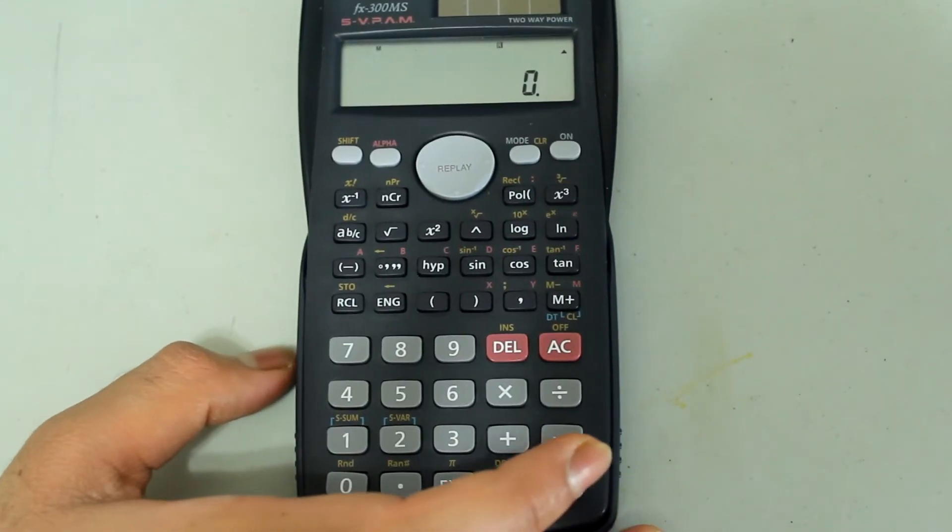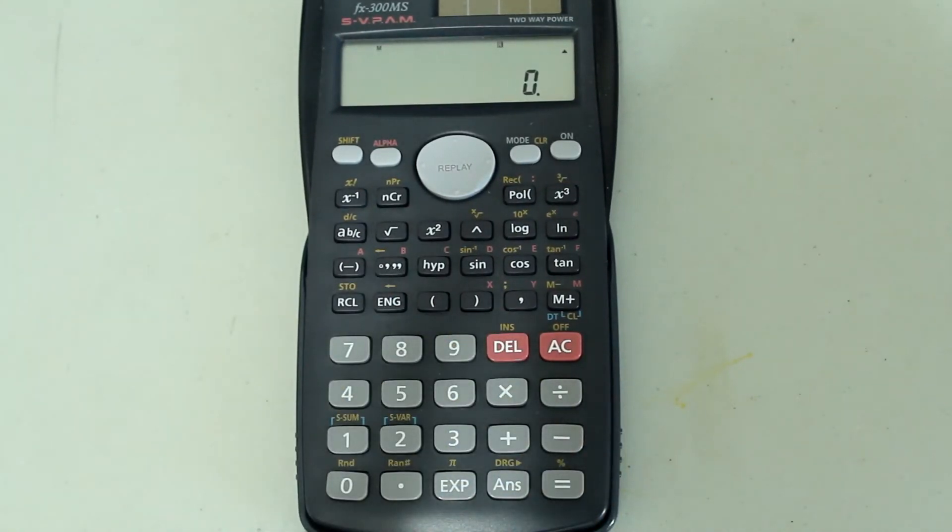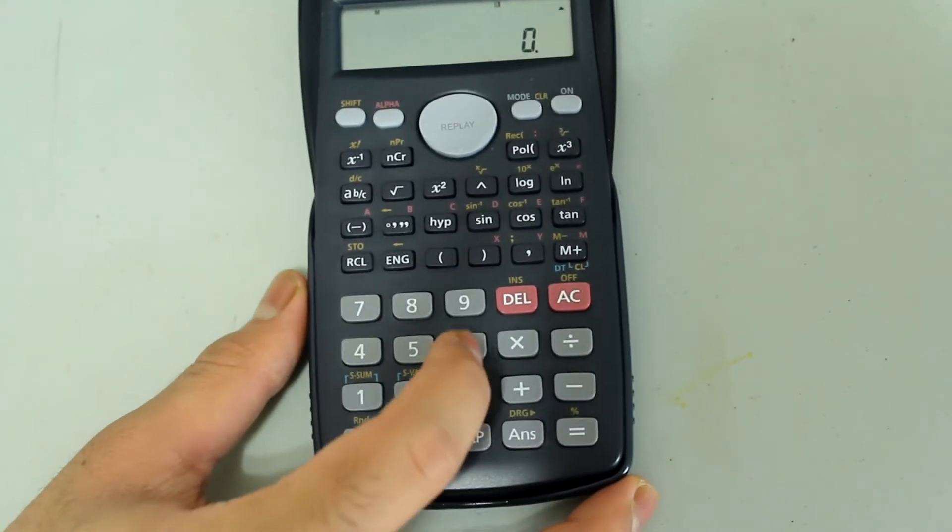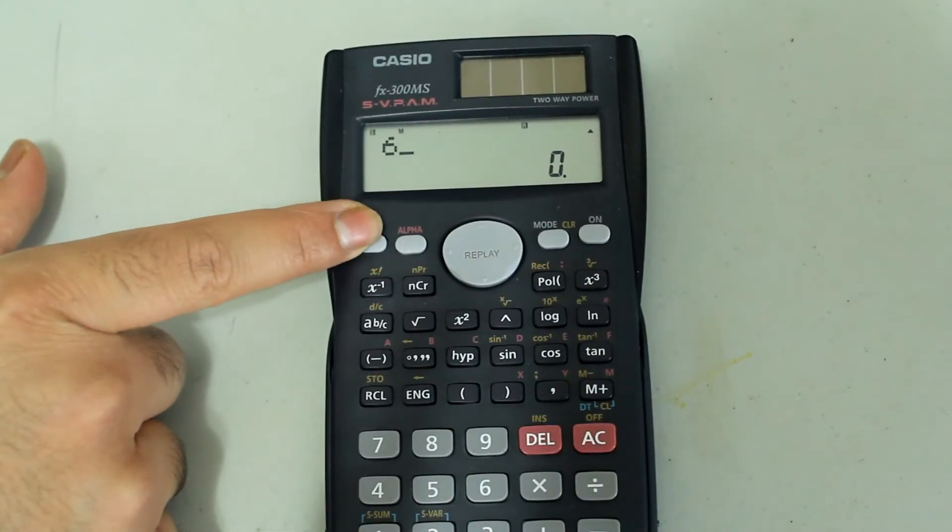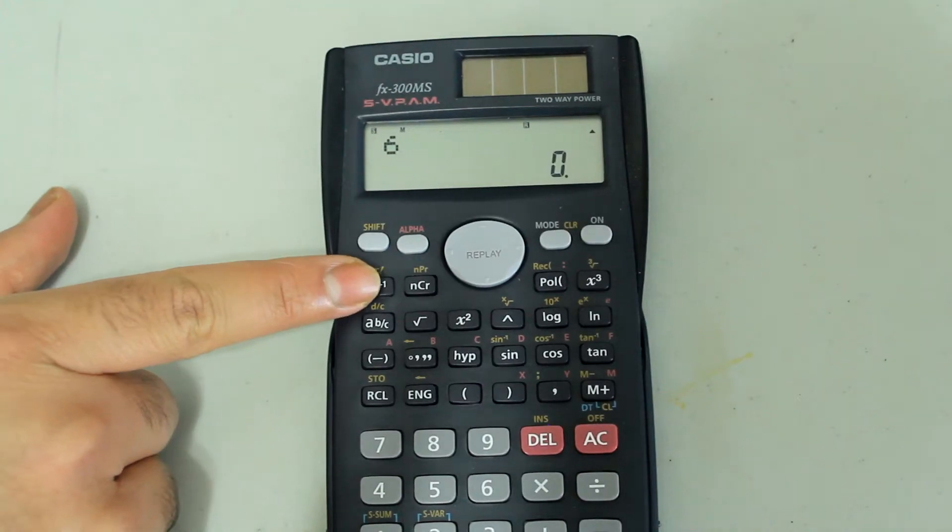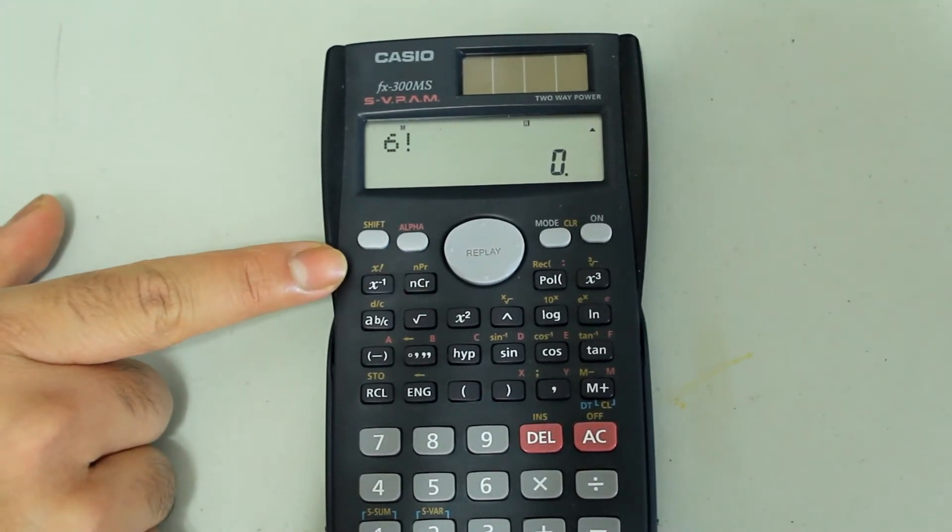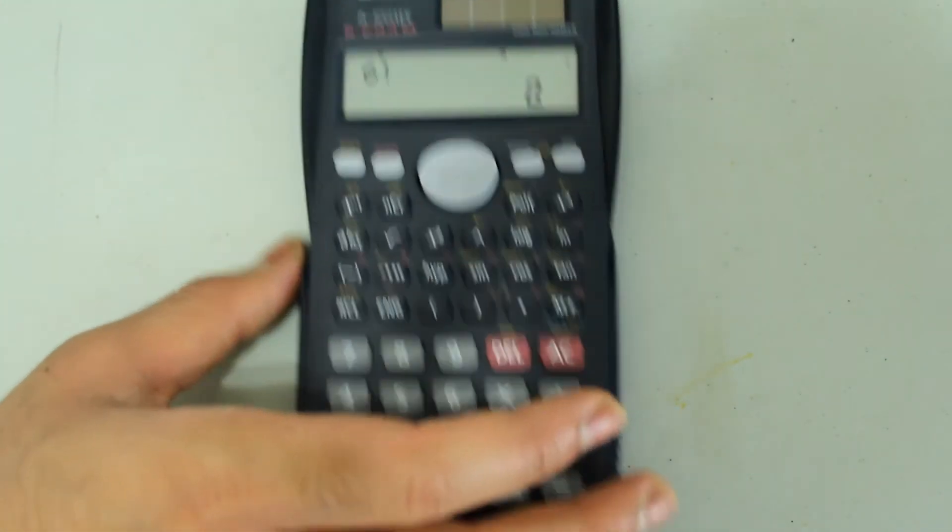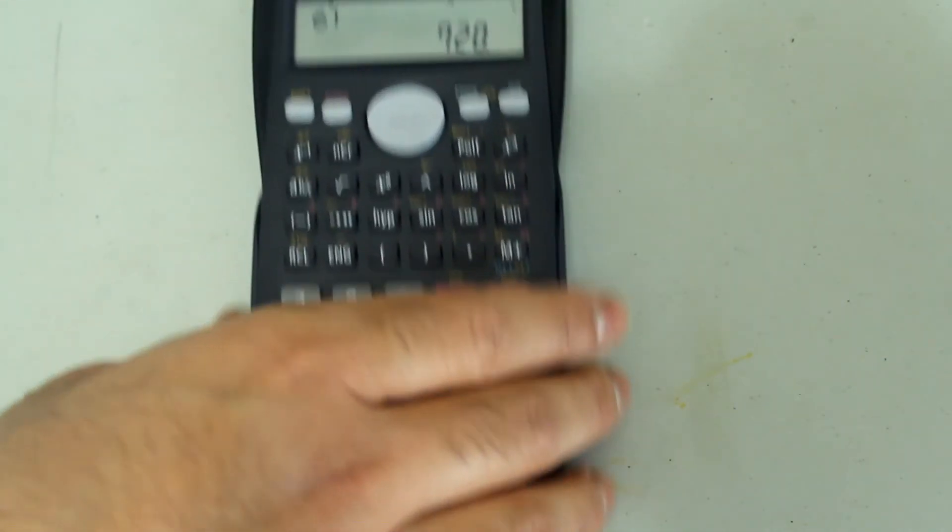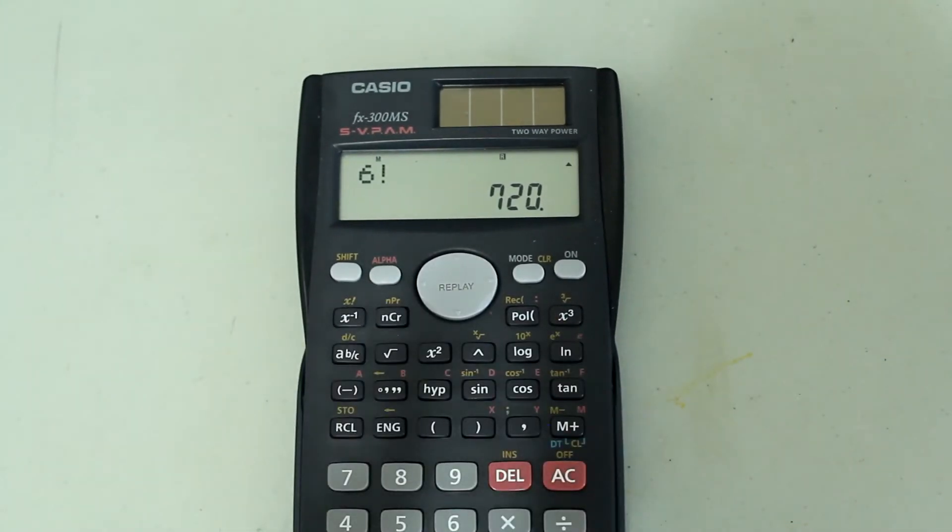Type in the number for which you wish to find the factorial, in this case 6. And then press shift and the x to the negative 1 button to select the factorial feature. And then press equals. And we get 6 factorial as 720.